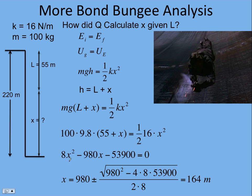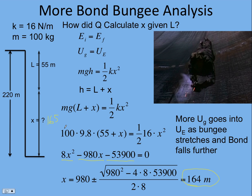I got 8x squared minus 980x minus 53,900 equals zero. Solving for x, we get 164 meters. If you go back to part one, we saw we had 165, so that's close enough for physics. This part is similar to what you do in the bungee jump lab, so make sure you study it carefully. More potential energy goes into elastic potential energy as the bungee stretches further and Bond falls further. So while the bungee is stretching, he's still losing gravitational potential and it ends up as elastic potential.